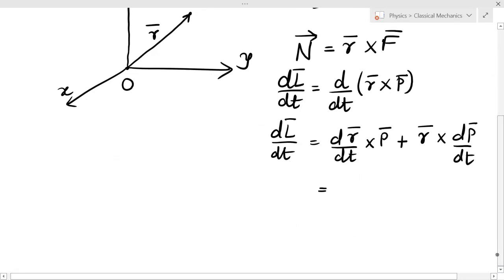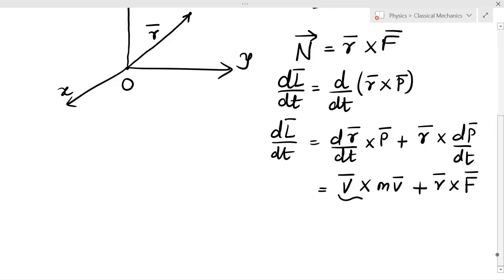dr̄/dt will be v̄ × mv̄ - I am writing momentum as mv̄ - plus r̄ × dP̄/dt. The rate of change of momentum is force, so this is F̄.